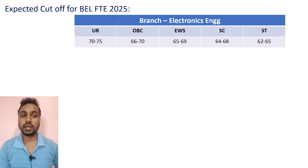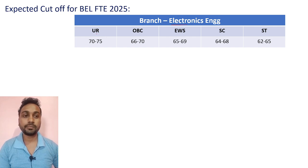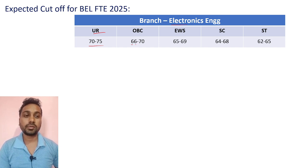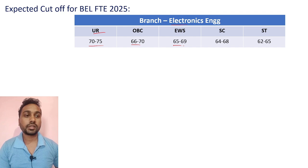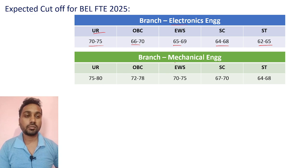For Electronics engineers, the expected cutoff is: Unreserved category 72–75, OBC 66–70, EWS 65–69, SC 64–68, and ST 62–65.